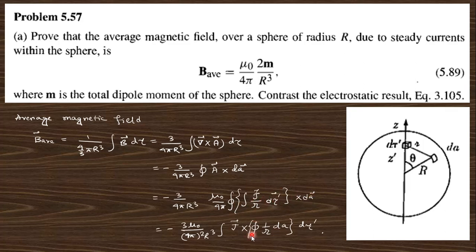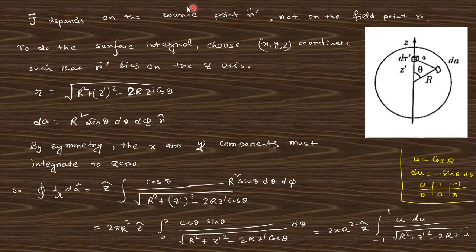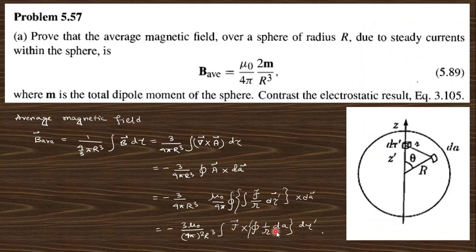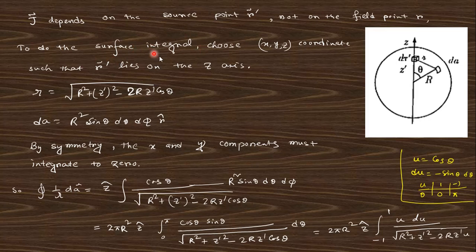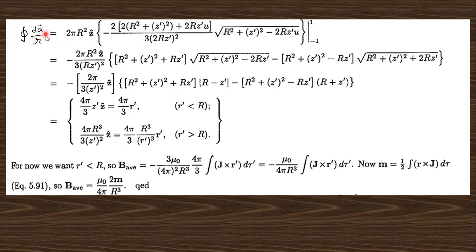Now, J depends on the source point only — that is r-prime — not on the field point. So to do the surface integral, choose xyz coordinates such that r-prime lies on the z-axis. Then curly-r is expressed accordingly, and dA is the small area element on the spherical shell. By symmetry, the x and y components must be zero, so only the z component survives. This gives the value of (1/r) dA.